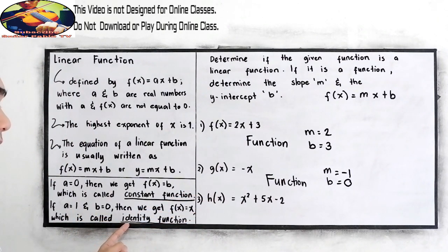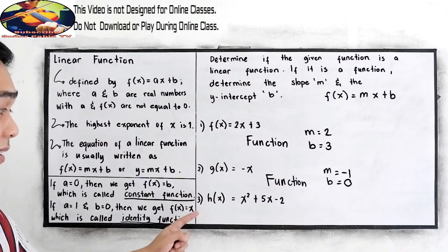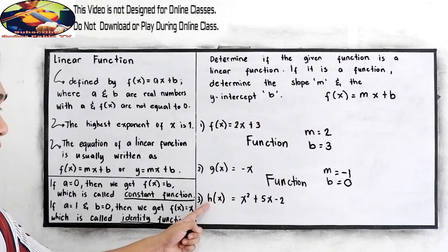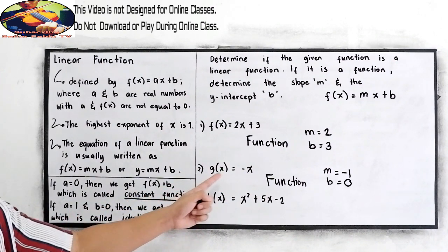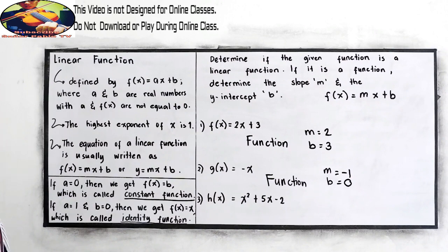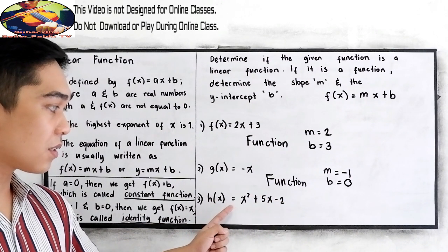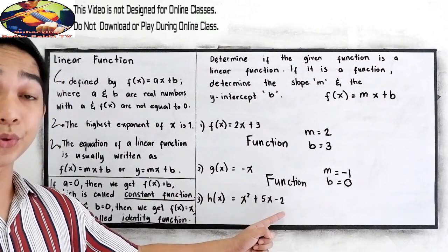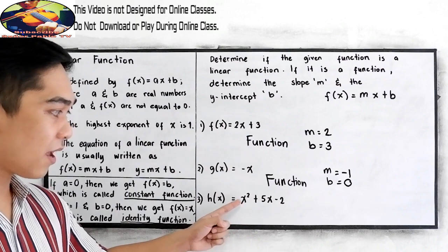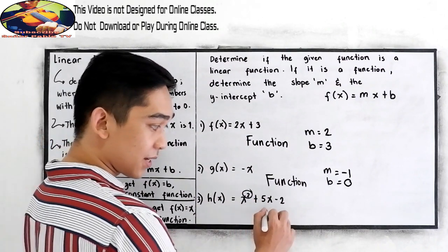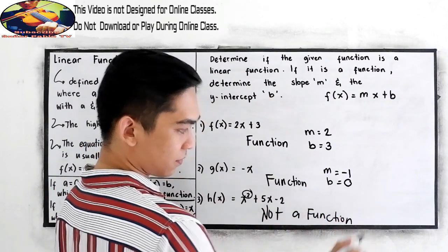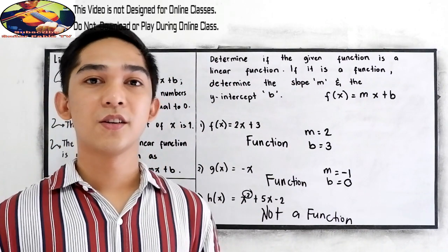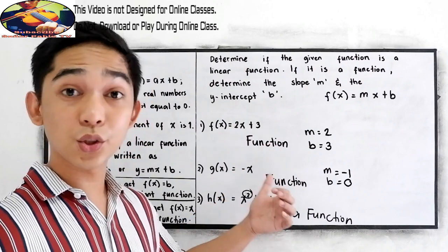This is not an identity function because a must be positive 1. Next, number 3: h of x is equal to x squared plus 5x minus 2. Check the exponent — we have a degree of 2. Therefore, it is not a linear function. We are done with numbers 1, 2, and 3.